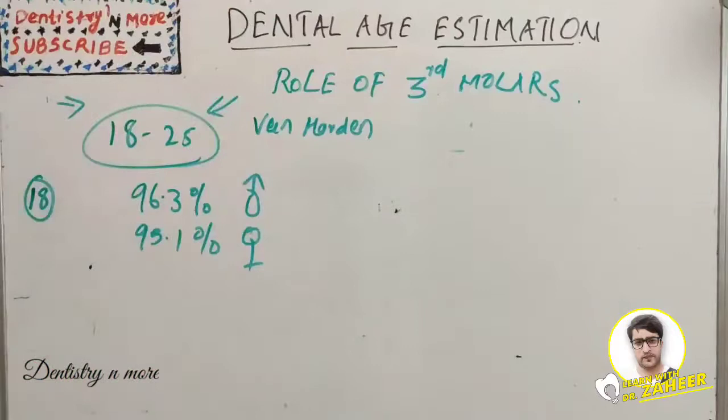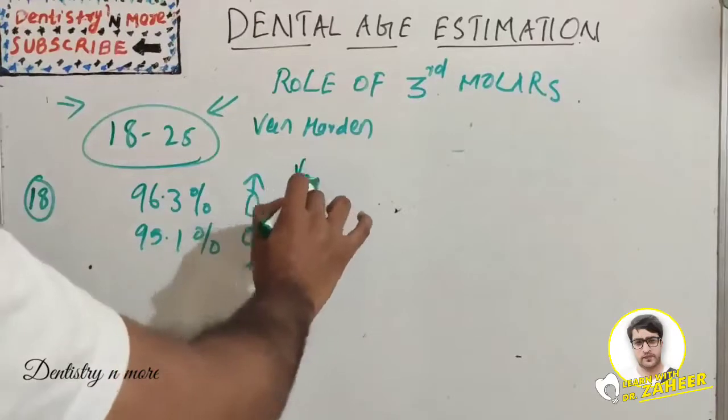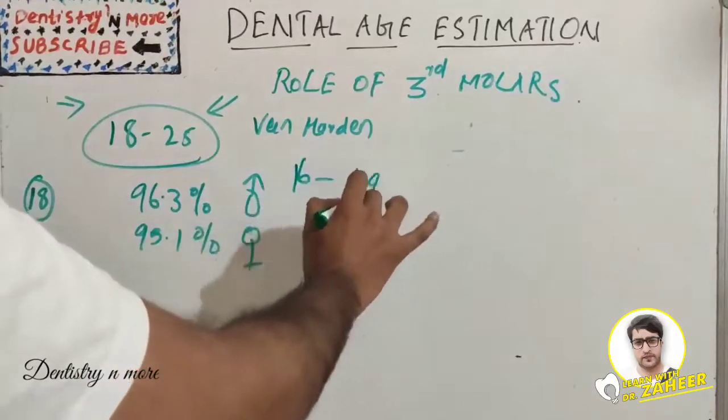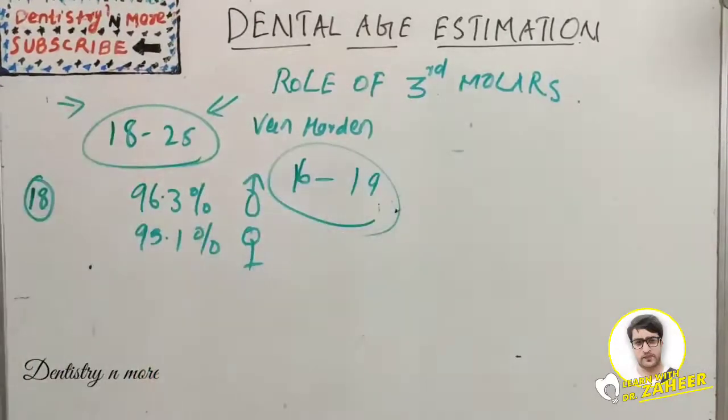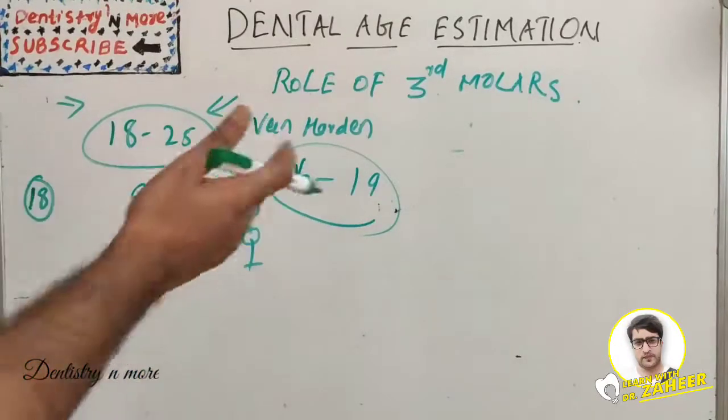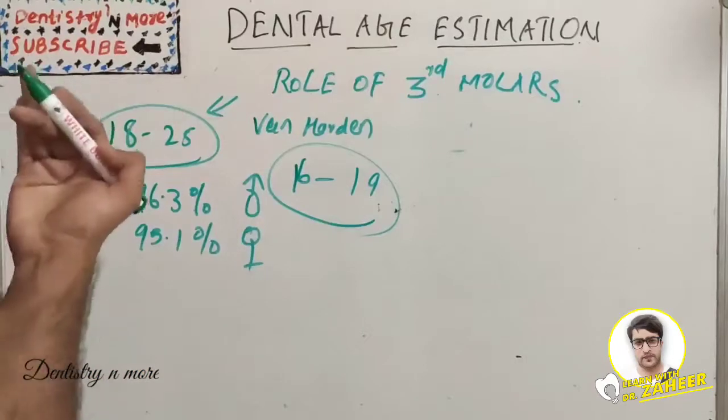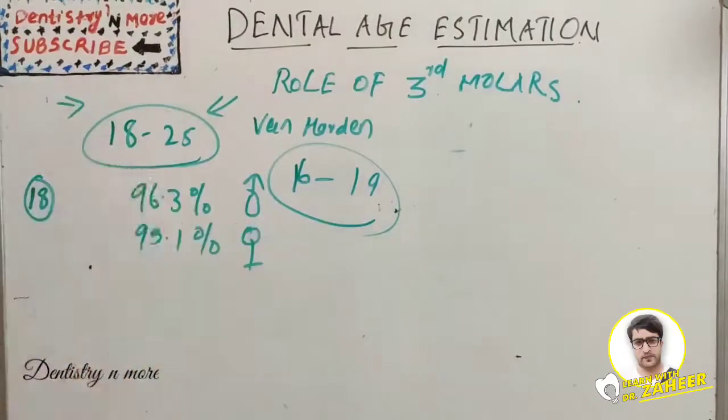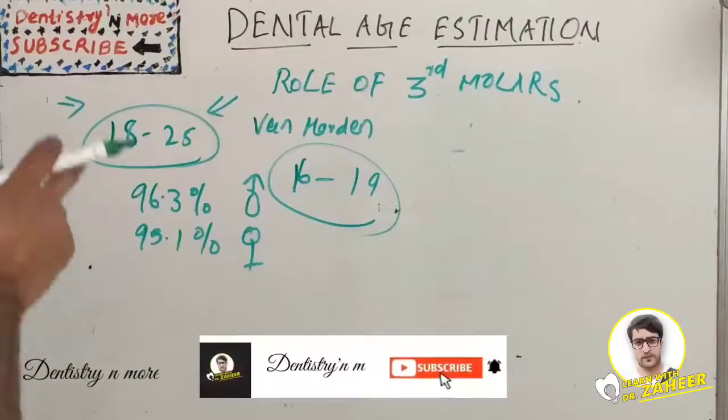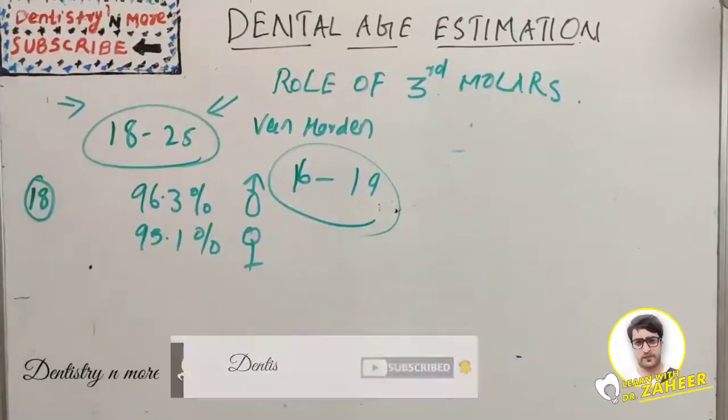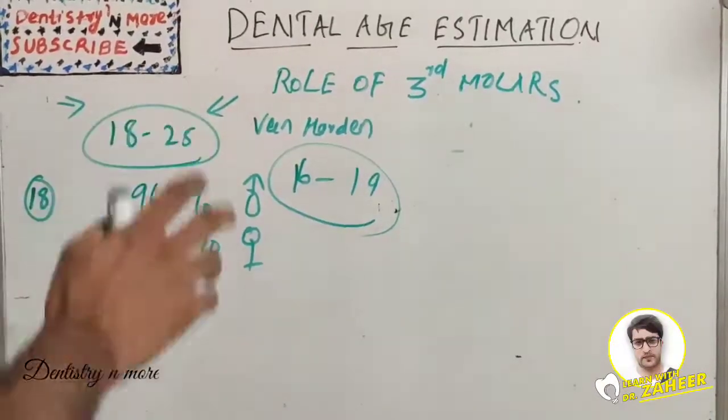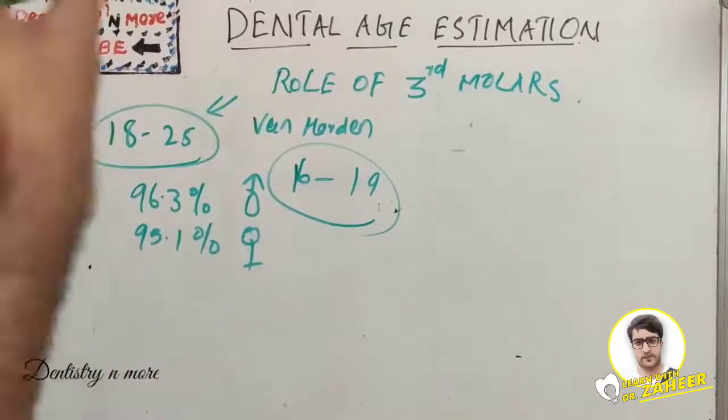This is the role of third molars in dental age estimation. This will be mostly useful between 16 to 19 where we are in doubt of crossing the 18 age, because this method completely depends on the calcification of third molars.